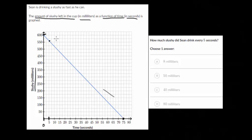It's hard to see exactly what that is. But it looks like at five seconds that there's about 560 milliliters remaining. So it looks like after five seconds that 40 milliliters were drank.